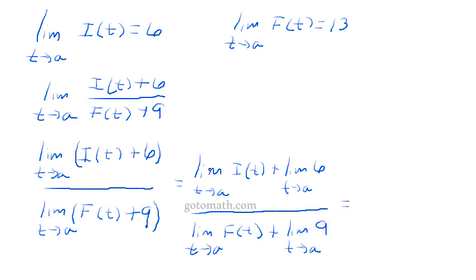So we know what this is, this limit is equal to 6, and the limit of a constant is just the constant, so the limit of 6 as t approaches a is just 6 over. Then we've got the limit of F(t) as t approaches a, that's equal to 13, and the limit of a constant is just the constant.